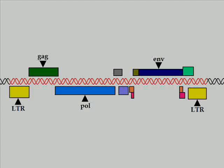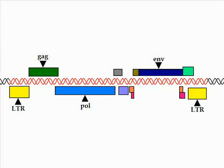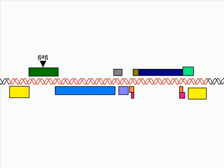This diagram shows the genes of a typical proviral retrovirus — that is, after it has inserted into the host's DNA. There are several markers that are key in identifying this as a viral genome. First, we have the long terminal repeats, or LTRs, which denote the ends of the viral genome. Between these ends, all retroviruses share three major genes, known as GAG, POL, and ENV.